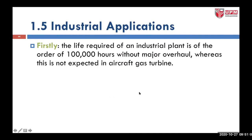Firstly, the life required of an industrial plant is of the order of 100,000 hours without major overhaul. You do not want a land-based gas turbine that generates power to have a life of only 1,000 hours. Imagine if every 1,000 hours you have to replace parts. You want a reliable system that can operate for a longer period of time, because you are supplying power to residential, industry, and so on.